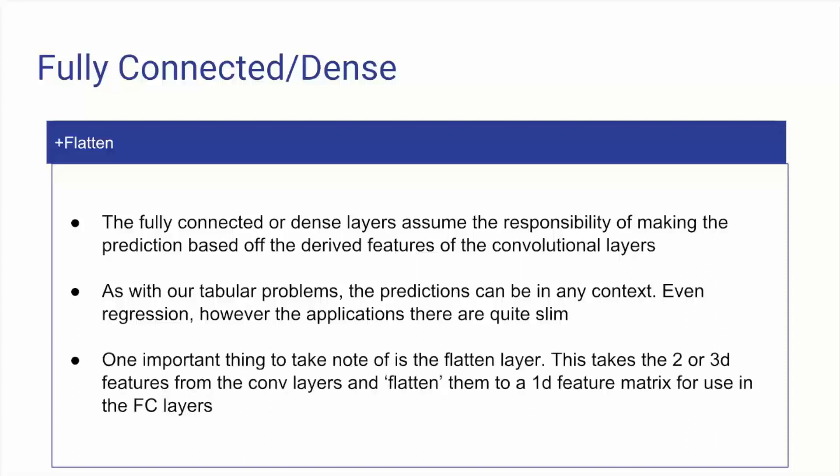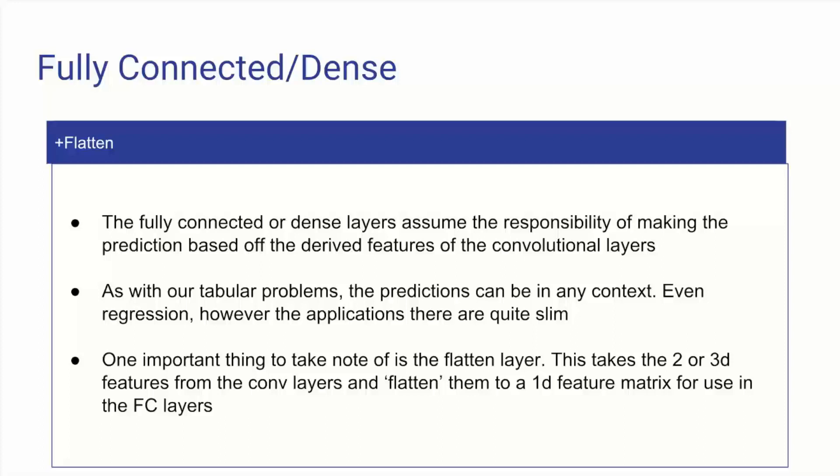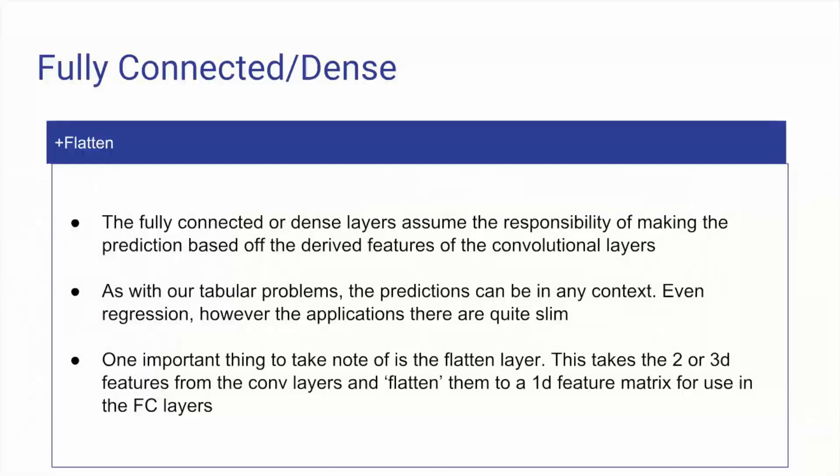And one important thing to take note of is the flatten layer. The convolutional layer is obviously looking at 2D and 3D features. All the flatten layer is doing is taking our 2D or 3D image feature matrix and flattening that up into a one-dimensional feature matrix. It's pretty simple.